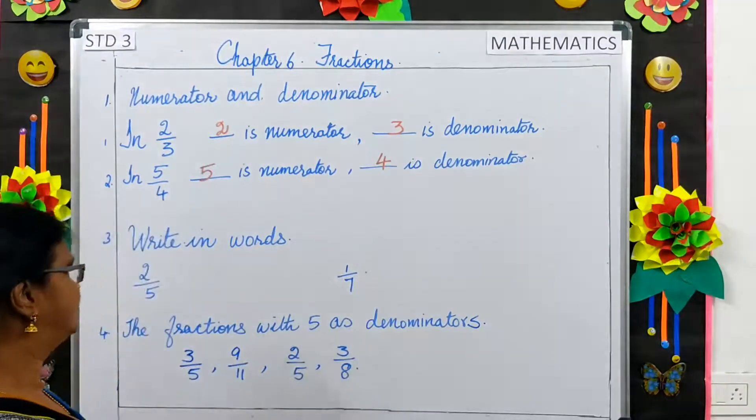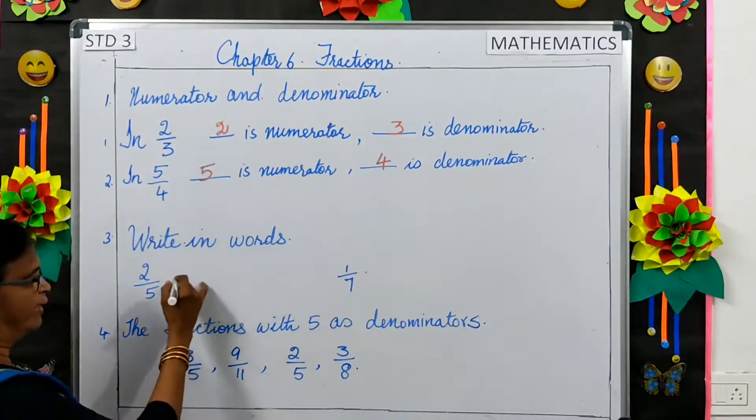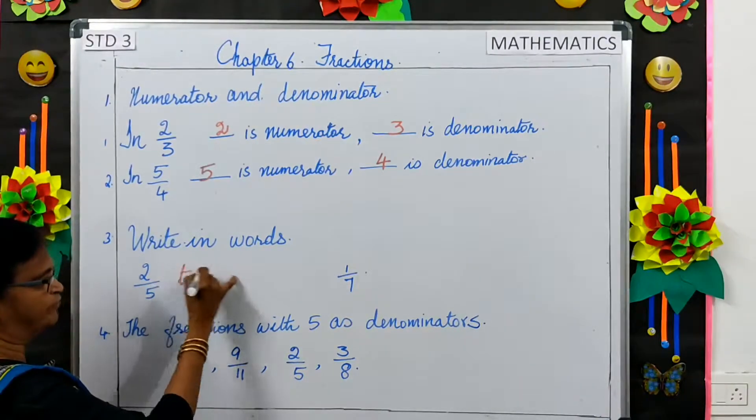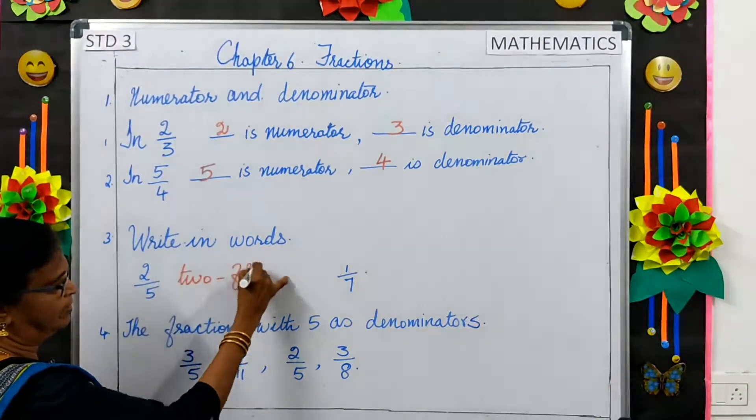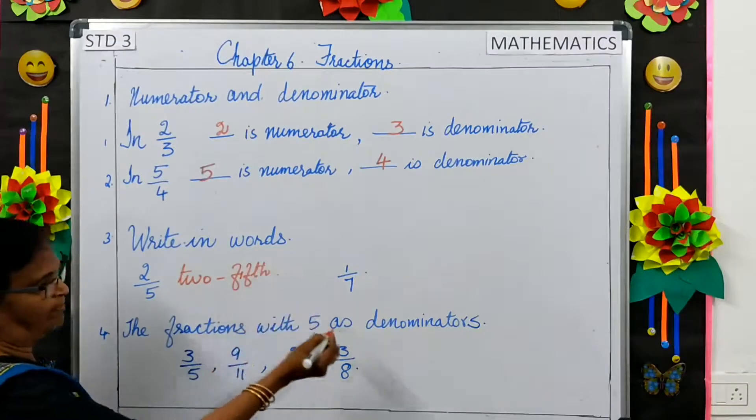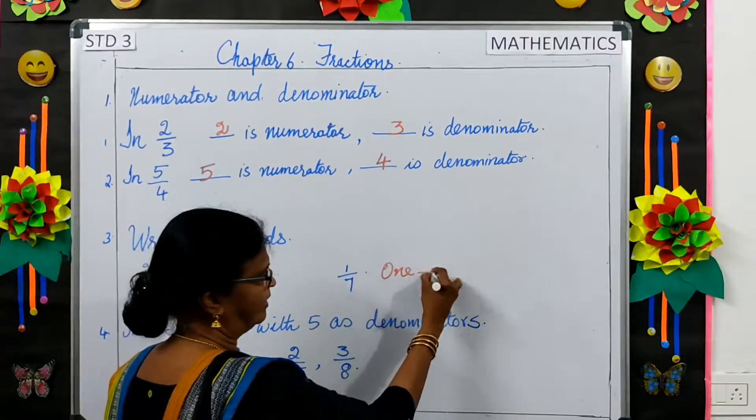Write in words, 2 by 5, that will be written as 2 fifth. 1 by 7, 1 seventh.